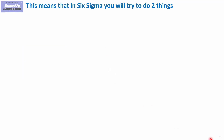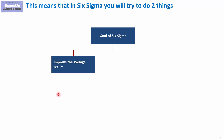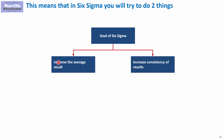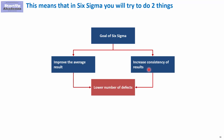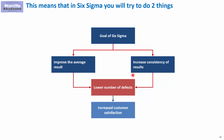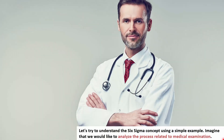The goal of Six Sigma — improving the process — can be achieved in two ways. The first way is to improve the average result. On top of that, instead of focusing only on the average, you can improve the consistency of results to make the process more predictable. Both routes should lead to a lower number of defects and, in turn, increase customer satisfaction.